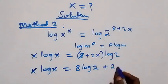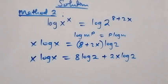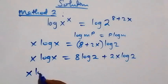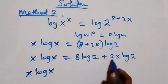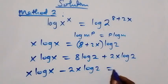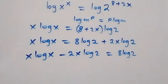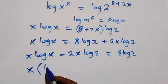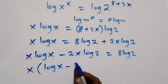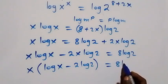Next, we bring the like terms together, moving terms with x to one side. We have x log x minus 2x log 2 equals 8 log 2. Factoring out x gives x into bracket log x minus 2 log 2, equals 8 log 2.